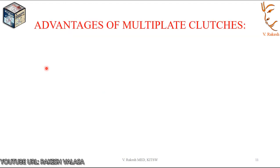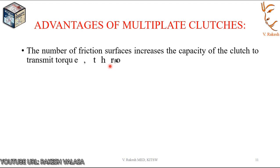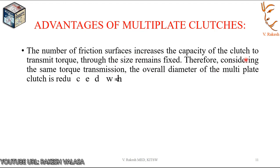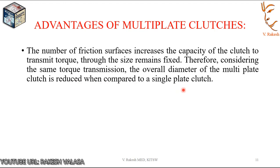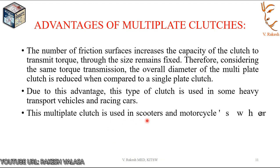Advantages of multi-plate clutches: the number of friction surfaces increases the capacity of the clutch to transmit torque while the size remains fixed. Therefore, considering the same torque transmission, the overall diameter of the multi-plate clutch is reduced compared to a single plate clutch. Due to this advantage, this type of clutch is used in heavy transport vehicles, racing cars, scooters, and motorcycles where space is limited.